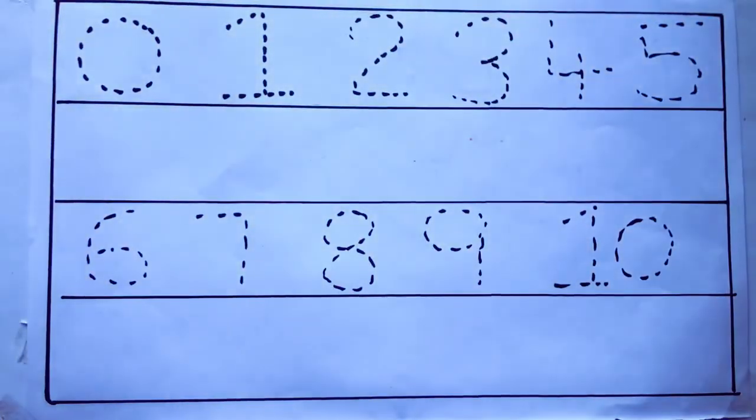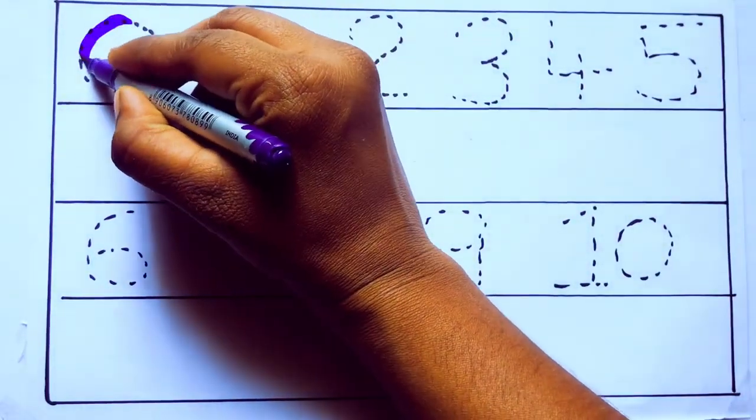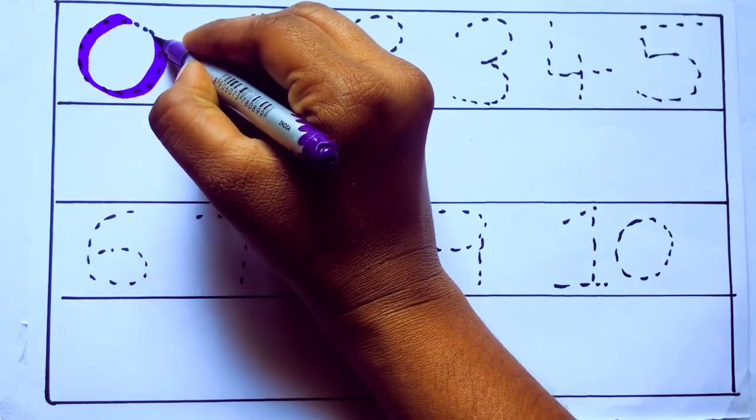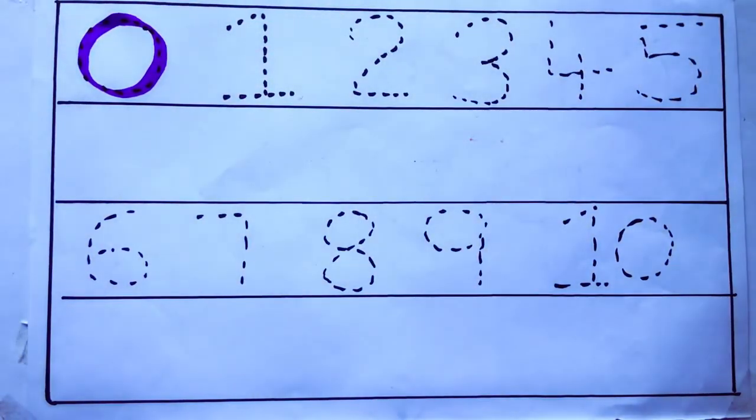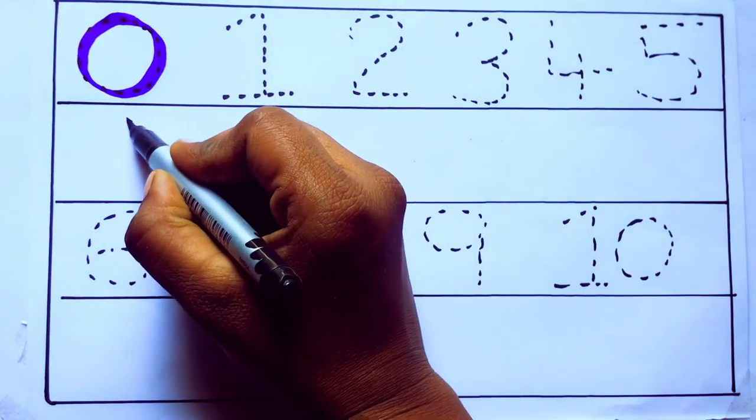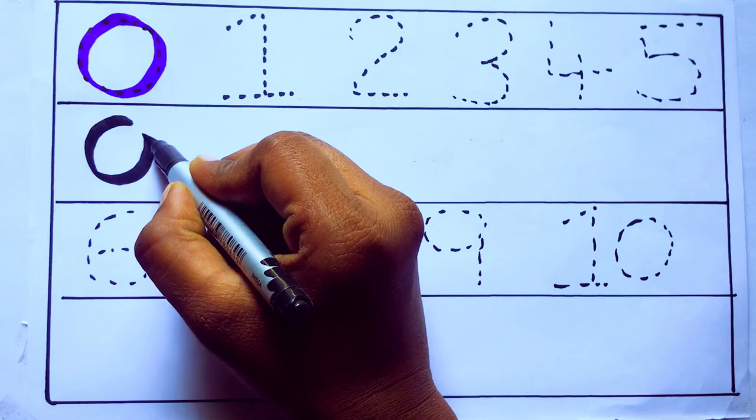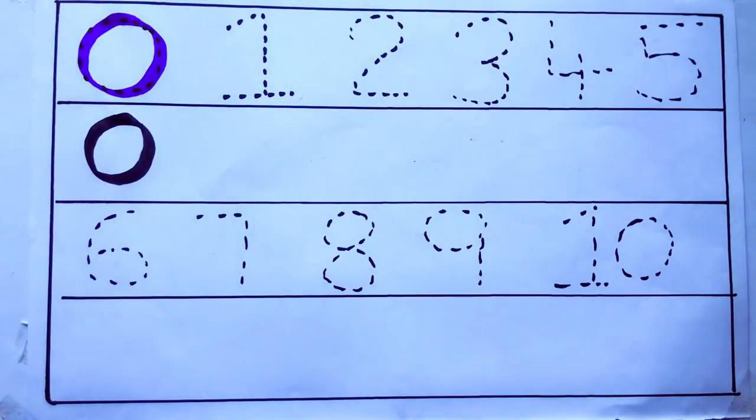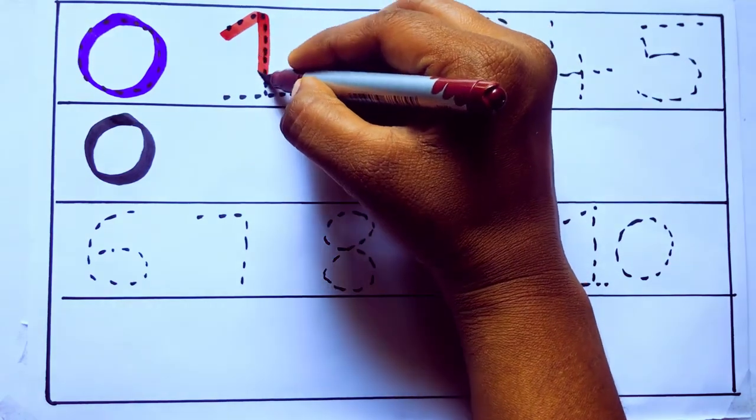Let's draw numbers. Violet color 0, Z E R O. Violet color 0, brown color 1, O N E, 1.